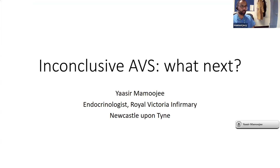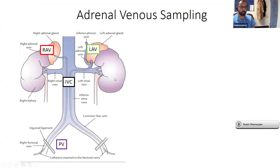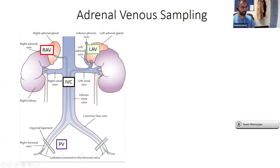Thanks for inviting me to talk about inconclusive AVS. I'm Yaasir Mamoojee, one of the consultant endocrinologists in the northeast of England. The first thing I want to talk about is AVS itself — adrenal vein sampling — which is used in the workup for primary aldosteronism. It's quite a complex procedure, and the way you work out the indices is also quite complex.